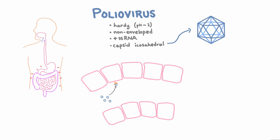Poliovirus binds to a receptor called CD155, then gets its RNA into the cell and starts making proteins and replicating. CD155 is a surface receptor important in making structural connections that hold adjacent epithelial cells together. Inside the cell, its positive single-stranded RNA can be directly translated into protein, and then its genome replicates using its own RNA-dependent RNA polymerase.